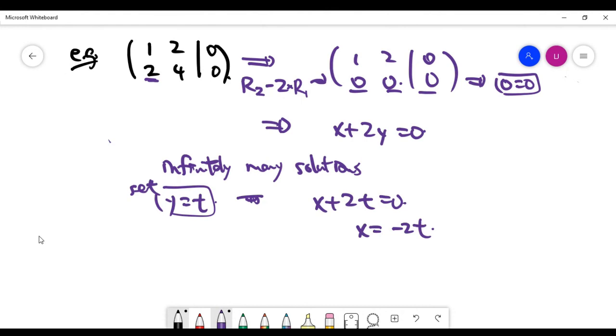Our solution is actually negative 2t for x and y is t, or you can present it this way. This is the solution form for the homogeneous system given at the top.